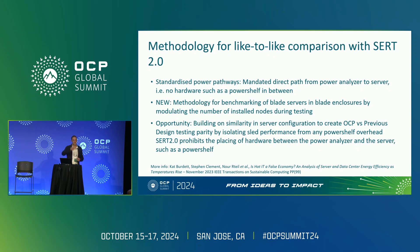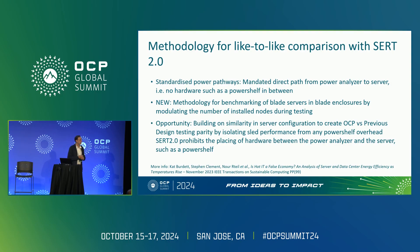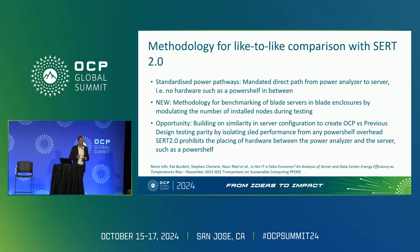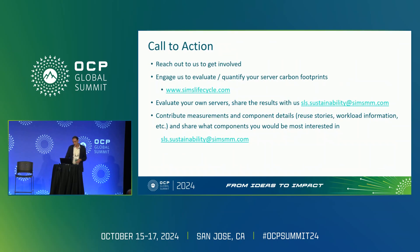The challenge is that the SPECsert specification was done for blade servers — it doesn't account for the OCP design where the power unit is outside and you have a bus bar. What we need to do is put a power shelf in, but you're not supposed to include a power shelf when measuring performance temperatures. The solution is to triangulate: put two or three servers in the wind tunnel and triangulate to get single-server power efficiency. That's part of our next steps with ongoing experiments.